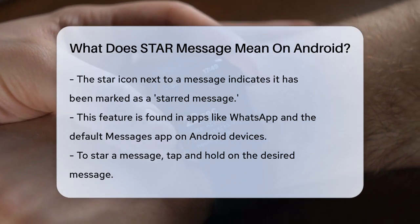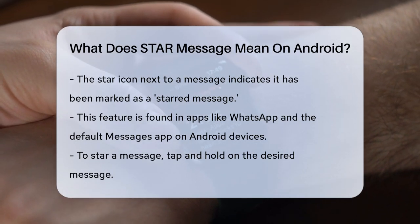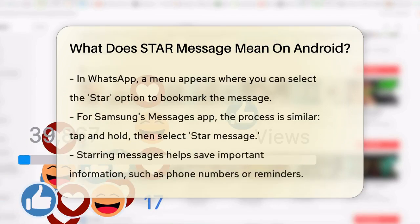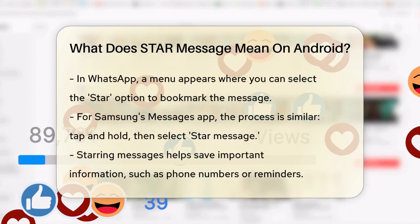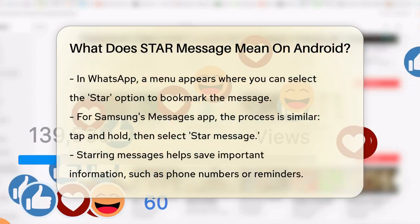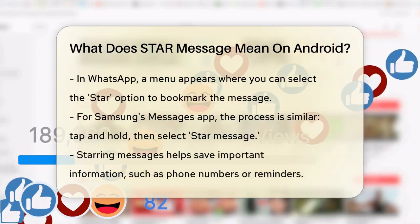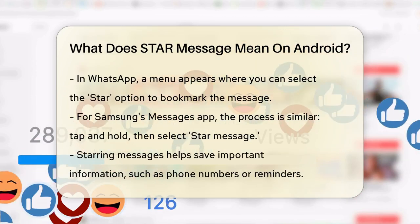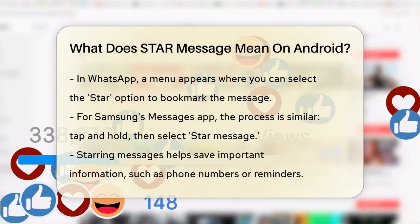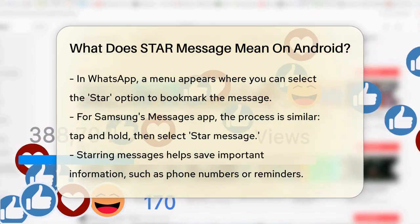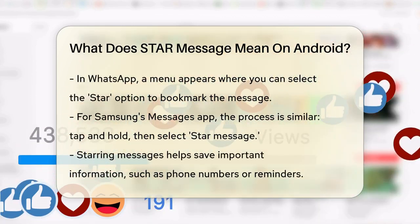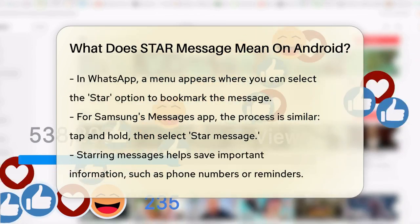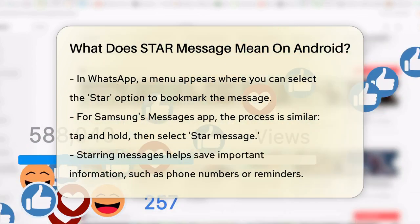To star a message, you simply need to tap and hold on the message you want to save. In WhatsApp, for example, you'll see a menu pop up where you can select the star option. This will bookmark the message so you can easily find it later without having to scroll through your entire chat history.